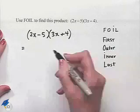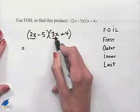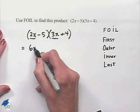The first requires us to multiply the 2x times the 3x. 2x multiplied times 3x will give us 6x squared.